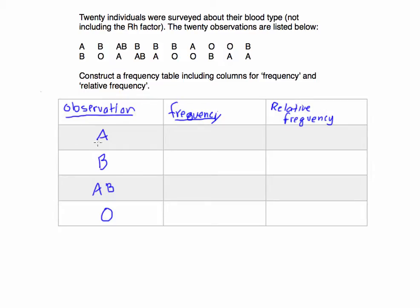So let's go through and count the number of observations. For A, we have one, I'm going to cross them out, one, two, three, four, five. So I had five values of A. For B I had one, two, three, four, five, six,